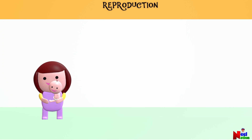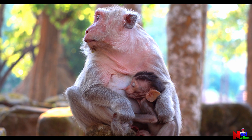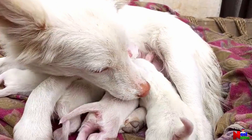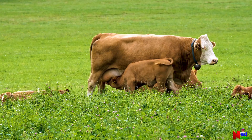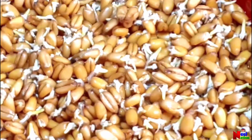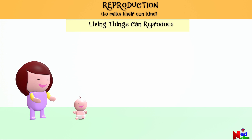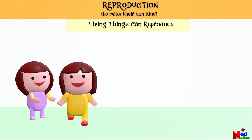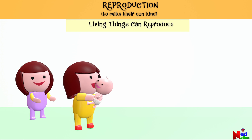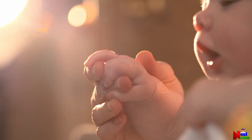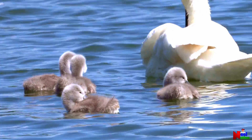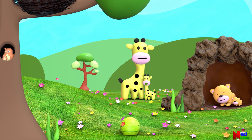Reproduction! All living things can reproduce. Reproduction is when living things create more of their own kind. For example, animals can have babies, and plants can make seeds to grow new plants. Humans were once tiny babies, and they grow and can have their own babies when they are older. Reproduction is important because it ensures that different kinds of living things — from animals to plants to people — continue to exist and thrive.